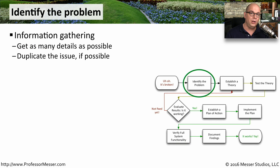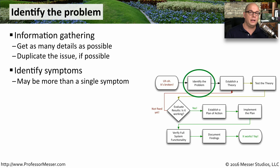This first step is all about identifying information. You need to completely understand what the problem might be, and if possible, you want to be able to duplicate the problem. With technology, these problems often come with multiple symptoms. It's never just one thing. It's often an error message, the system is slow, and the screen turns blue. And you need to be sure to document all of these so that you can understand what the total issue might be.